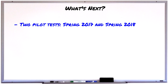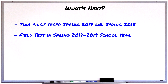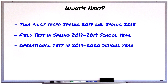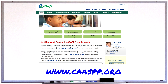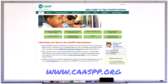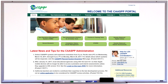California will administer two pilot tests, one in Spring 2017 and another in Spring 2018. The CAA for Science field test will be administered in the 2018-2019 school year and will be operational for the 2019-2020 school year. Not all features on the test will be implemented until the test becomes operational. You can visit the CAASPP.org website to look at the sample embedded performance task and familiarize yourself with the new test. There you will also find resources to help you and your students prepare, as well as a variety of ways to help develop the CAA for Science.